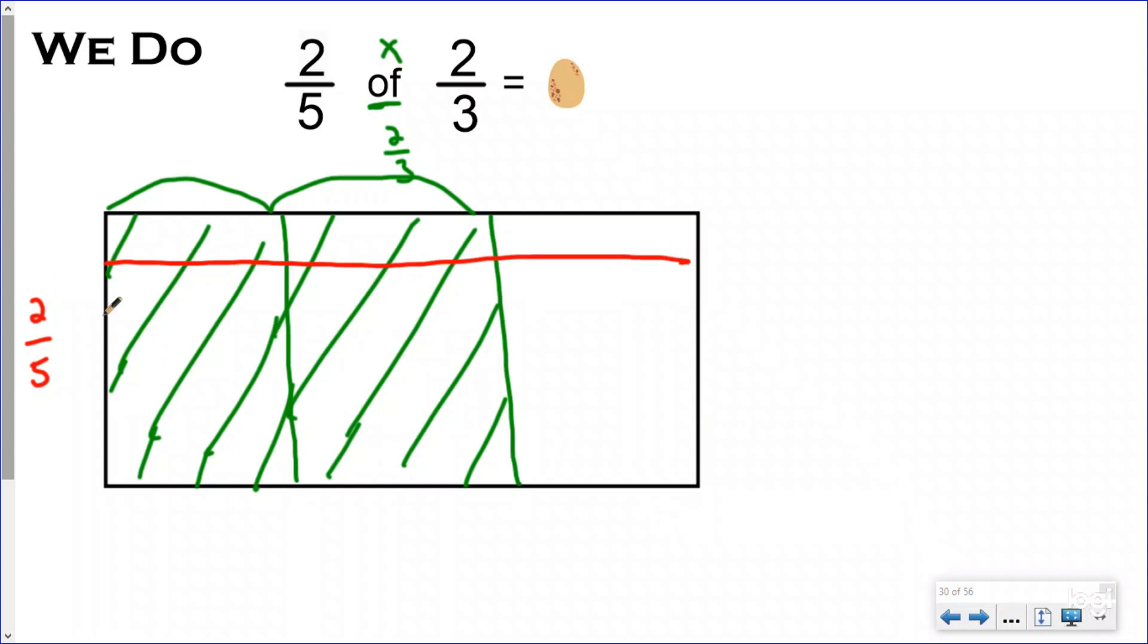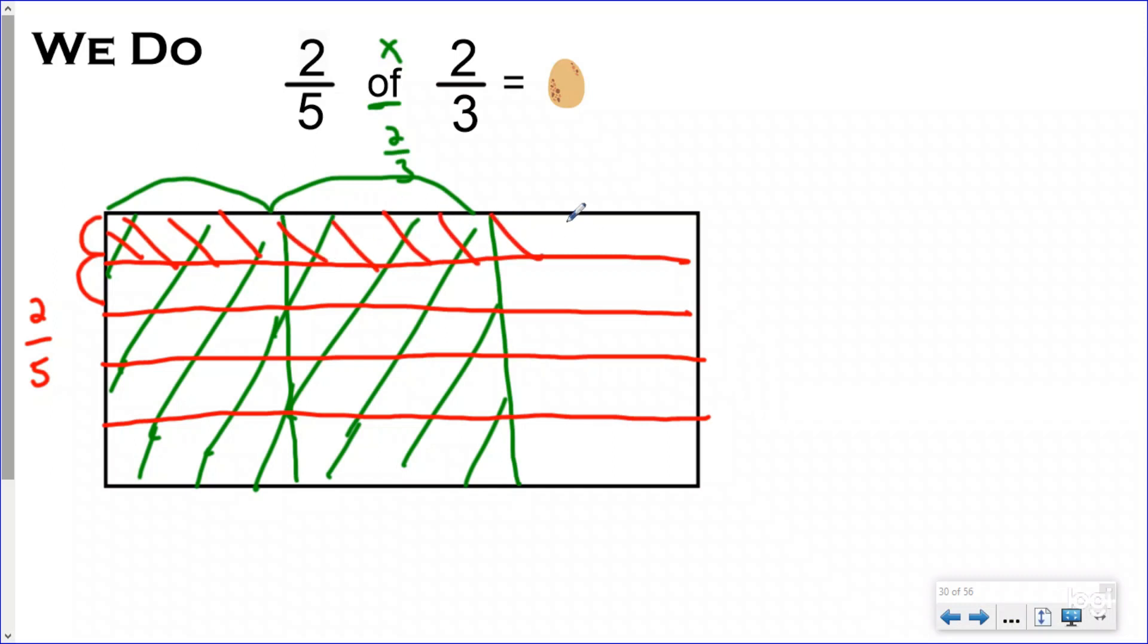So now I need to know what is two-fifths of two-thirds, and so I'm going to split this side going horizontally into five equal pieces because that is my denominator. Again, trying to be as equal as possible, although sometimes it is hard to be perfect. So now I have five equal pieces, and I only want to know two-fifths of those, so cross-shading the opposite way of how I did it before, I'm going to cross-shade two entire fifths. Not two pieces, two-fifths. So sometimes people just shade in two of these pieces instead of the whole row. Make sure you do the whole row.